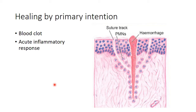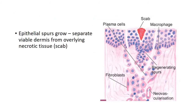Let's see the events occurring in healing by primary intention. As usual, the first thing happening here is initial hemorrhage followed by clotting of blood, which is then followed by an acute inflammatory response. What happens next is that the basal cells of the epidermis from both cut margins start proliferating and migrate towards the incisional space.